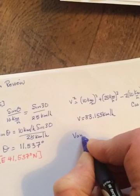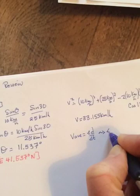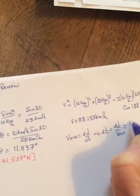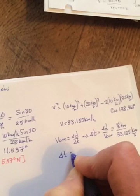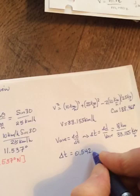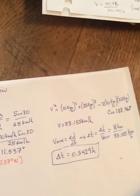So then remembering that equation from grade 10, v average equals delta d over delta t, so delta t equals delta d over v average. So it was 18 kilometers divided by 33.155 kilometers per hour. Doing the math, you should get something like 0.5429 of an hour, so just a bit over a half an hour. That's number one.